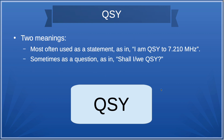QSY — you may have inferred what that means from the little story at the beginning. Most often it's used as a statement: I'm going to QSY to whatever frequency. Or maybe you're talking to your friend on the repeater and you find out you're within simplex distance — let's QSY to simplex. It can also be used as a question: shall we QSY? QSY simply means a change in frequency.